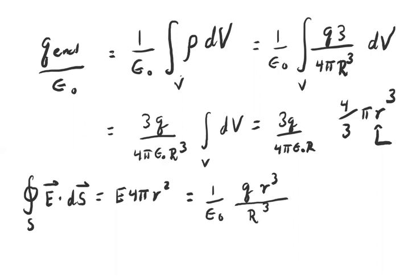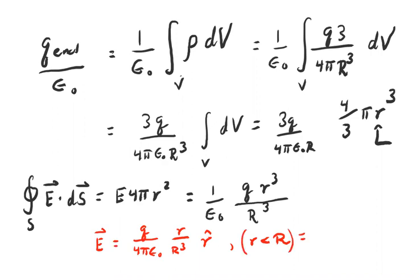Putting this together: E · 4πr² = Q·r³/(R³ε₀), and the 4π's cancel, giving E = Qr/(4πε₀R³). As a vector E⃗ = (Q·r)/(4πε₀R³) · r̂ for r < R. Alternatively, in terms of volume charge density ρ: E⃗ = ρr/(3ε₀) · r̂.